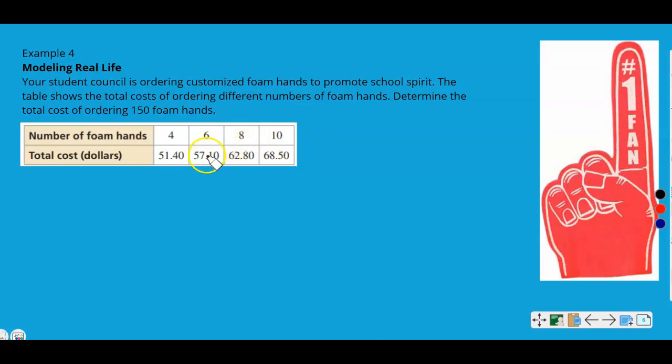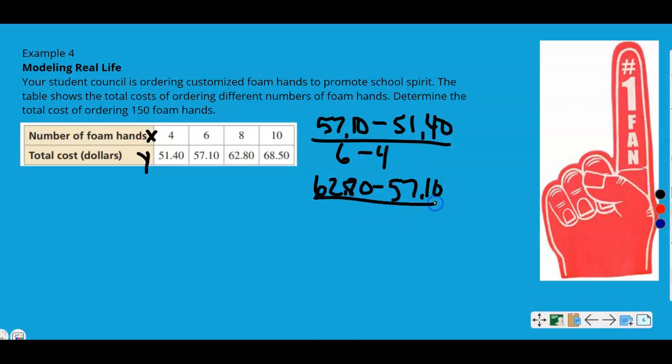So let's check the rate of change. The rate of change, again, is your slope. Remember, we can say this is our X and this is our Y. And remember, we do Y minus Y divided by X minus X. And we've done this multiple times in the previous video. So that's the first two. So now we need to check the second two, 62.80 minus 57.10. And then the 8 minus 6.